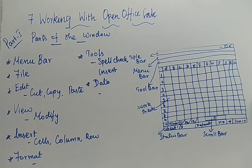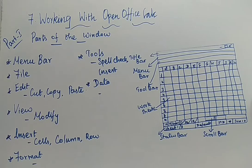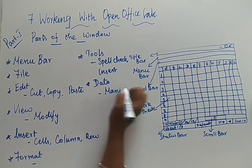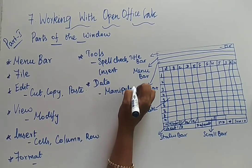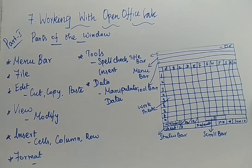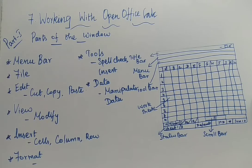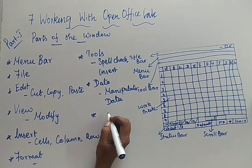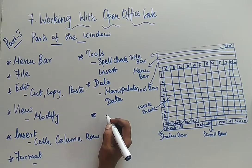Data manipulation — what commands you can have? You can have Sort — whether you are going to arrange them in ascending order or descending order, that is your sorting. Next is Filter, Total, Validity — everything you can do. Those commands are available under the Data menu.